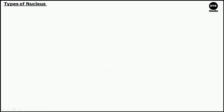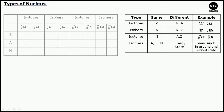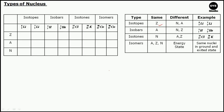Let us now move to a new topic — types of nucleus. We can classify nuclei depending upon their proton number, neutron number, or energy states. The first classification is isotopes. Isotopes are nuclei that have the same atomic number but different mass numbers and neutron numbers. Since they have the same atomic number, they belong to the same element. For example, ₃Li⁶ and ₃Li⁷ both have atomic number 3, but ₃Li⁶ has mass number 6 and neutron number 3, while ₃Li⁷ has mass number 7 and neutron number 4.